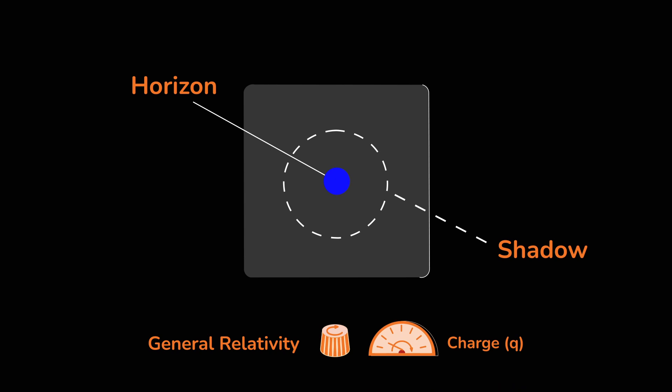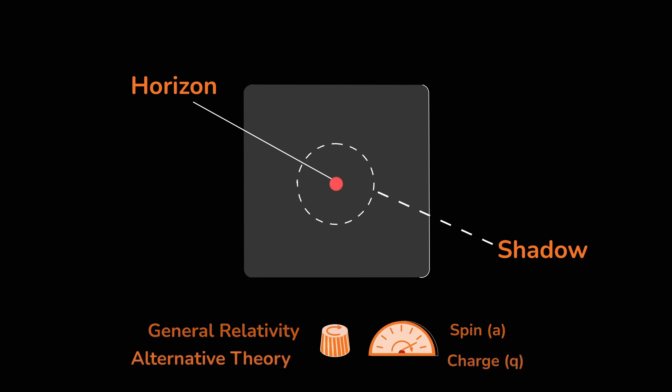Based on the size of their shadows, it is possible to tell whether they were charged or rotating or from a completely different theory.